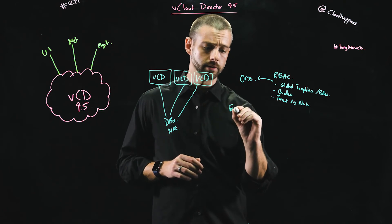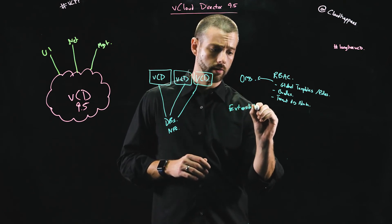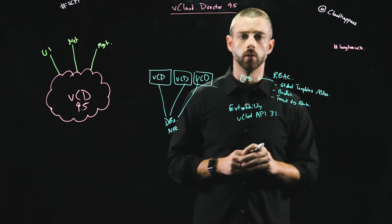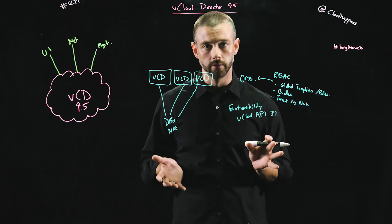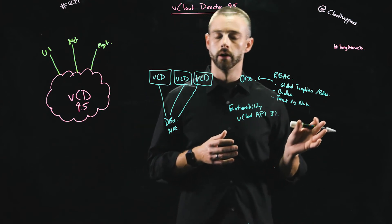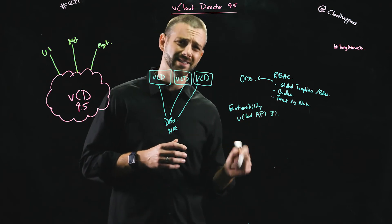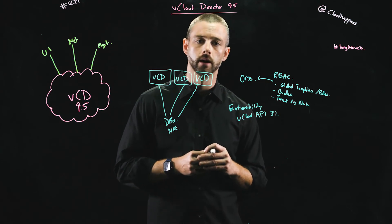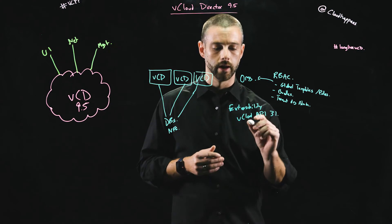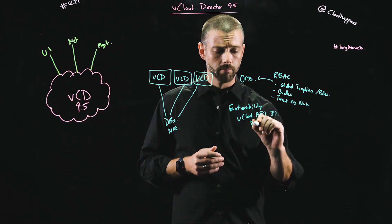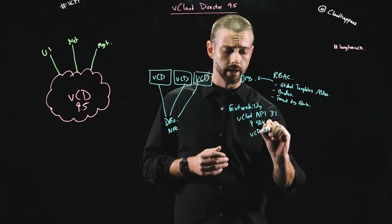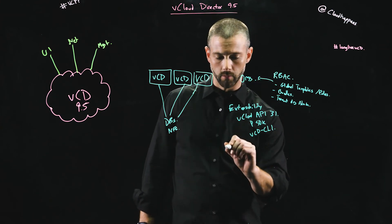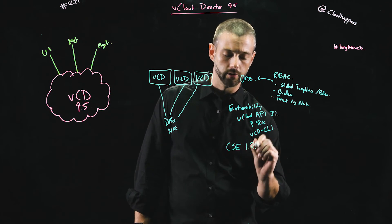From an extensibility perspective, we've introduced the new vCloud API, which is version 31. Note that we're going through a lot of cleanup and deprecating some of the older versions — anything below version 26 is now deprecated, and anything under version 19 is no longer supported. There's been a lot of efficiency and optimizations associated with the new API. This has also introduced the new Python SDK and the VCD CLI, both of which were released when vCD 9.5 shipped.